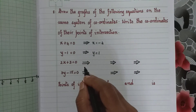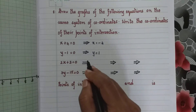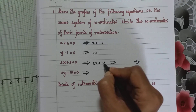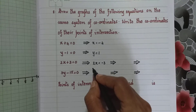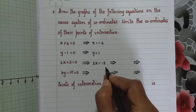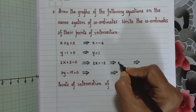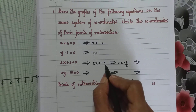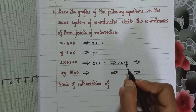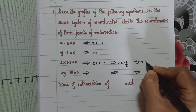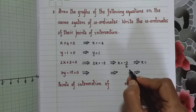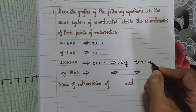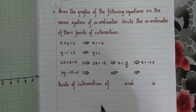Next we have 2x plus 3 equal to 0. Taking 3 to the other side, it becomes 2x equal to minus 3. Therefore x equal to minus 3 upon 2. Since 3 upon 2 is 1.5, minus 3 upon 2 will be minus 1.5. So we can write x equal to minus 1.5.